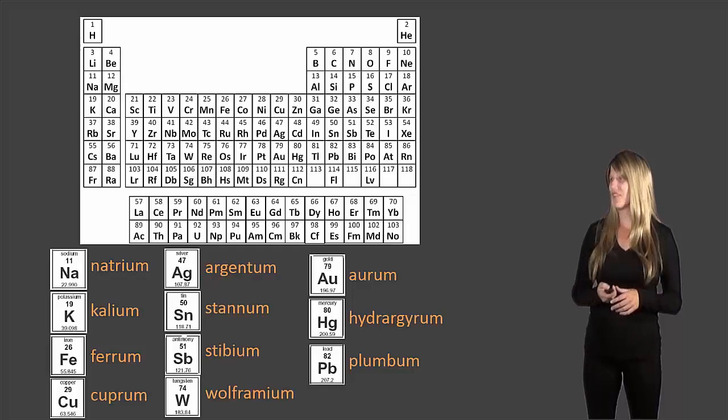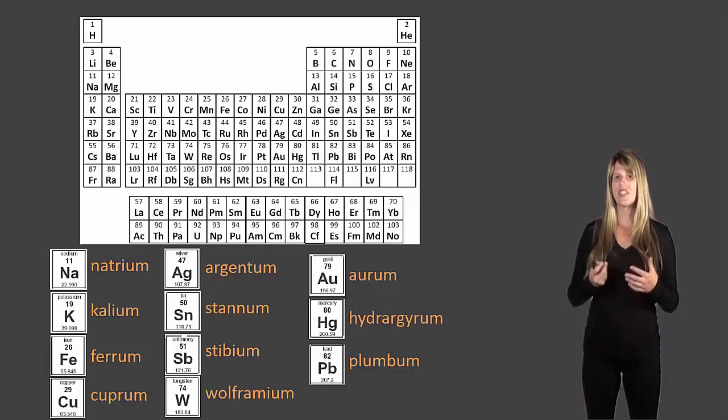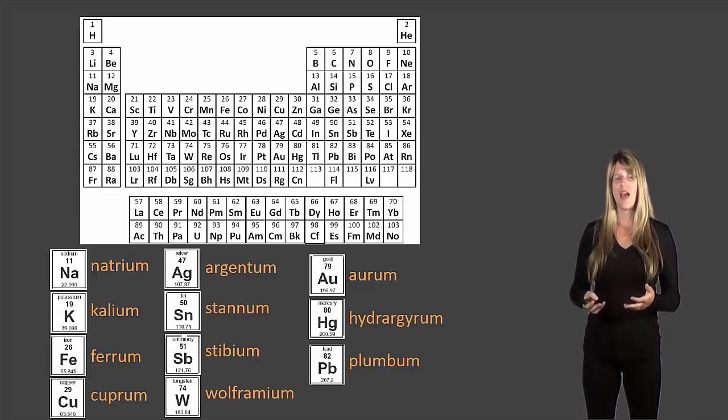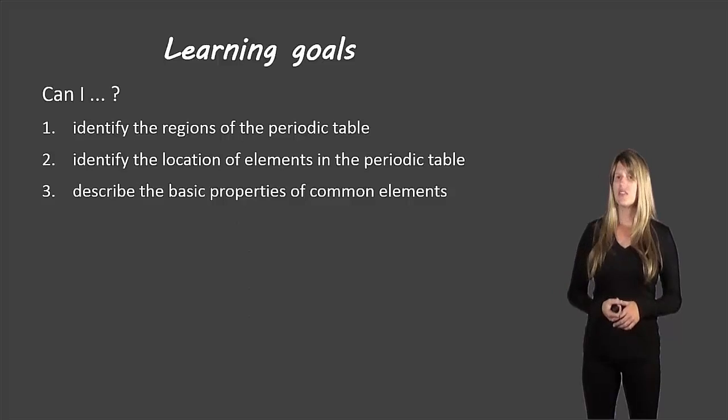The last thing I want to mention is there are some elements that have symbols that seem a little bit out of place with their names. The reason that some elements have different symbols actually comes from their original names. For example, sodium was originally called natrium - that's where the Na comes from. Potassium was originally kalium - that's where the K comes from. You don't need to memorize these for my class. This is just for interest's sake if you'd like to know where some of those symbols came from.